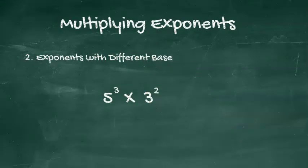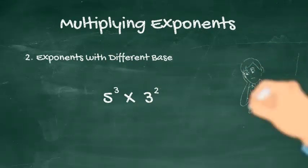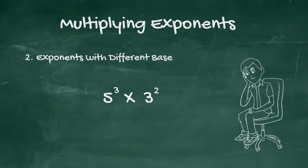If the bases are different, for example, in 5 to the third times 3 to the second, you have to do the math the long way to figure it out.